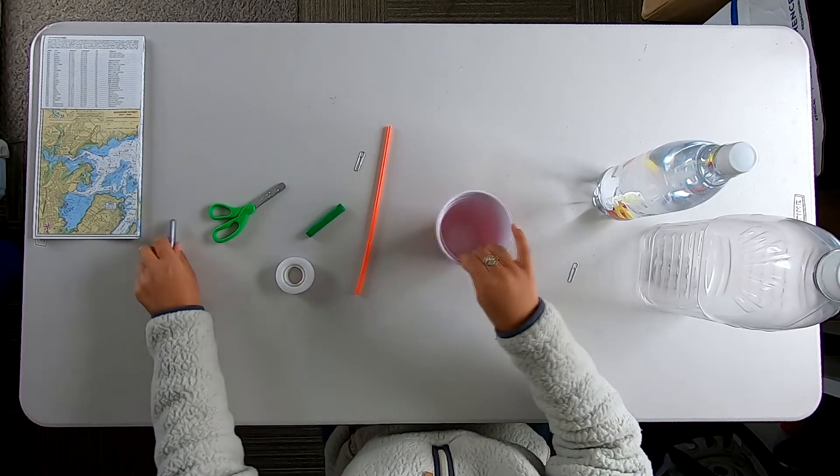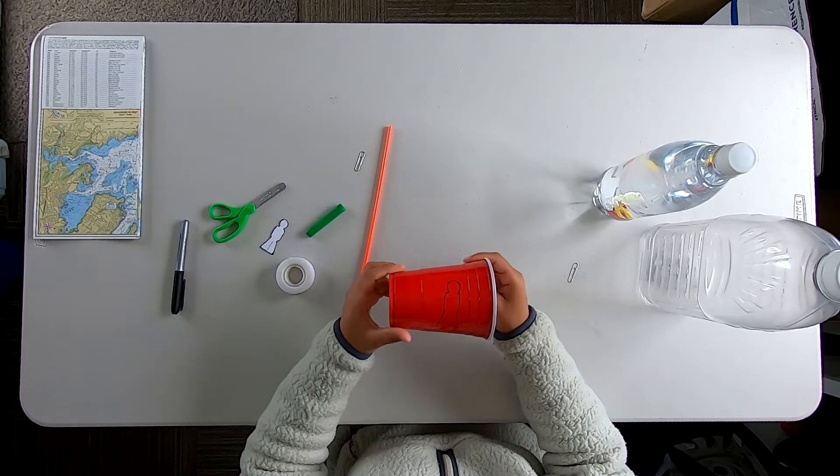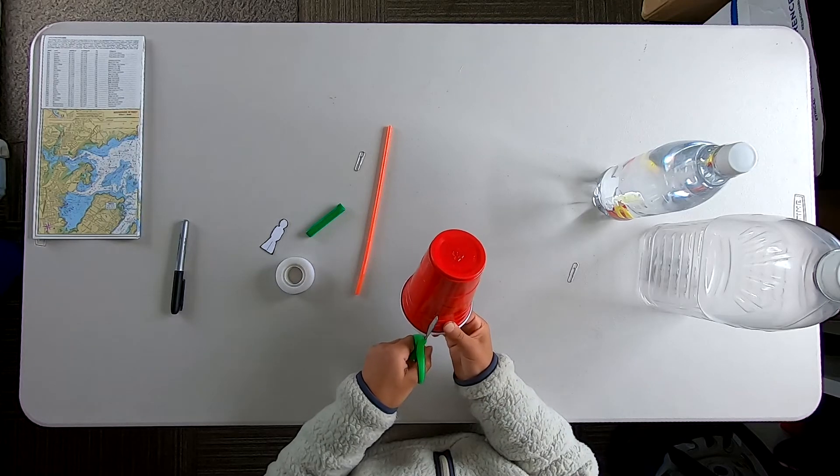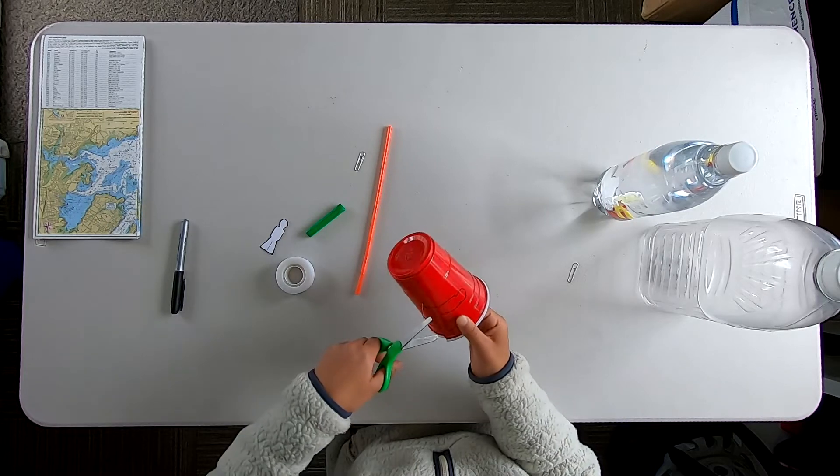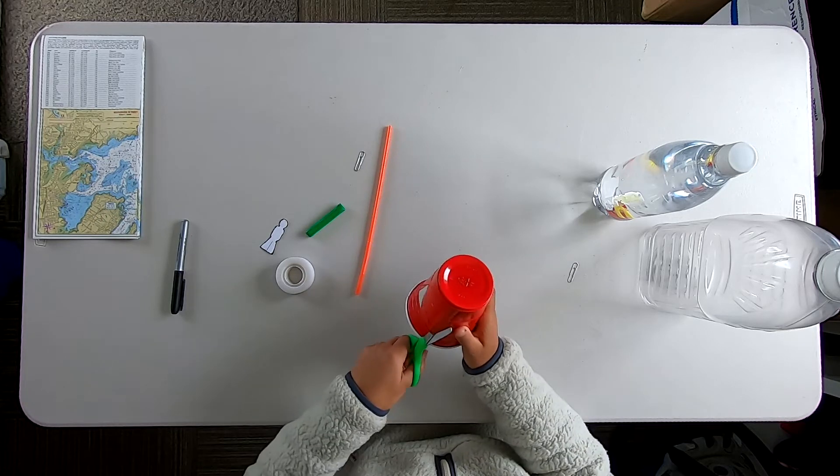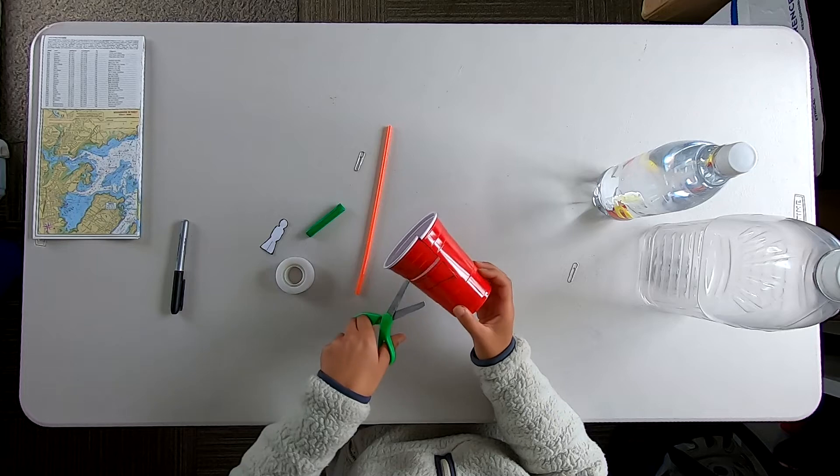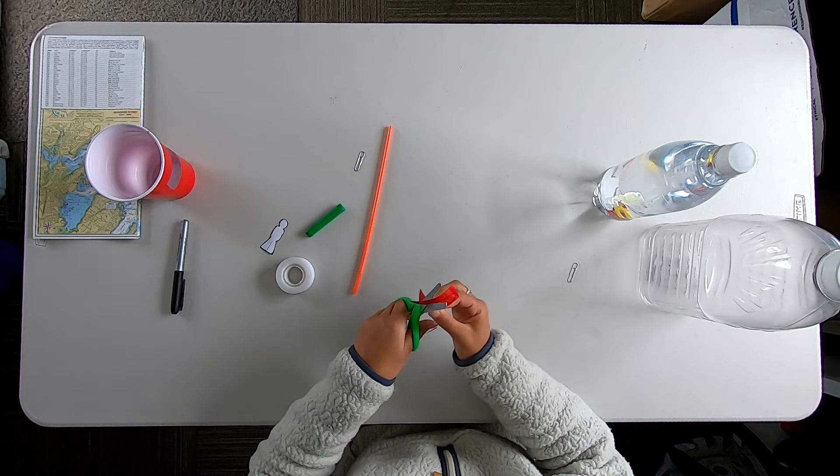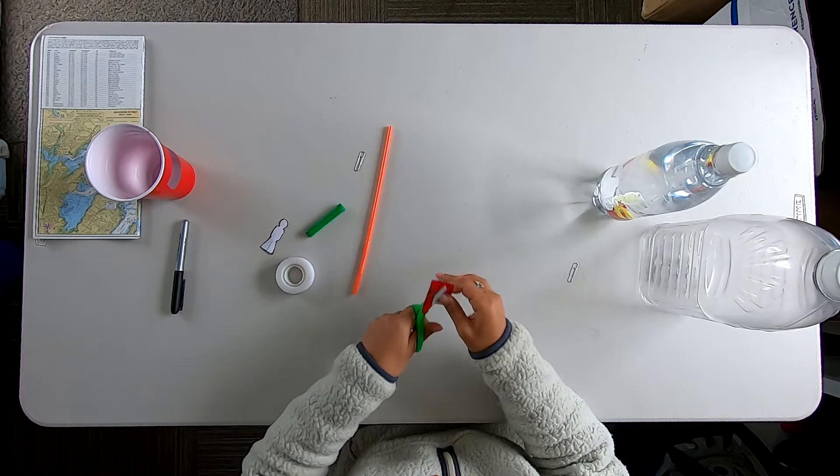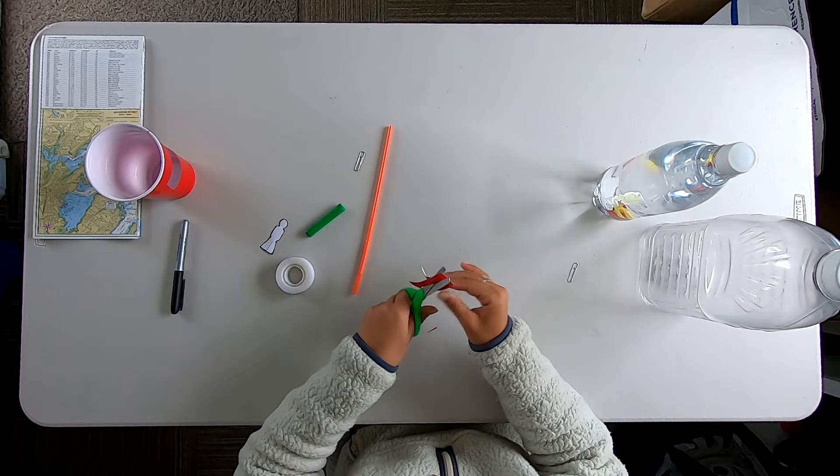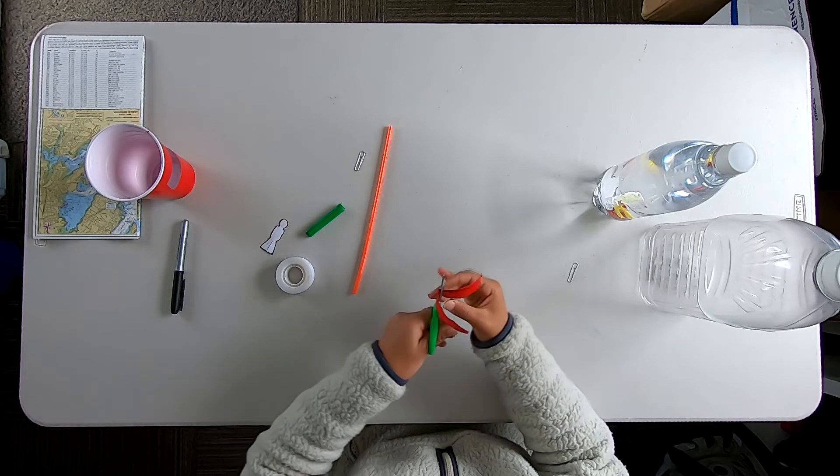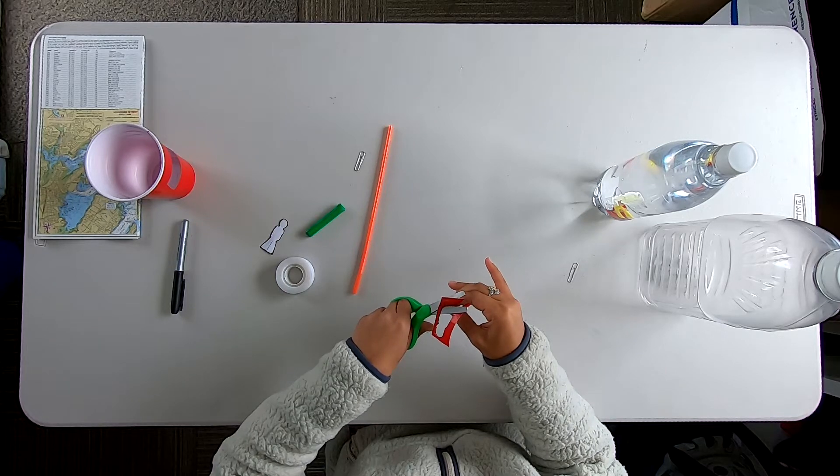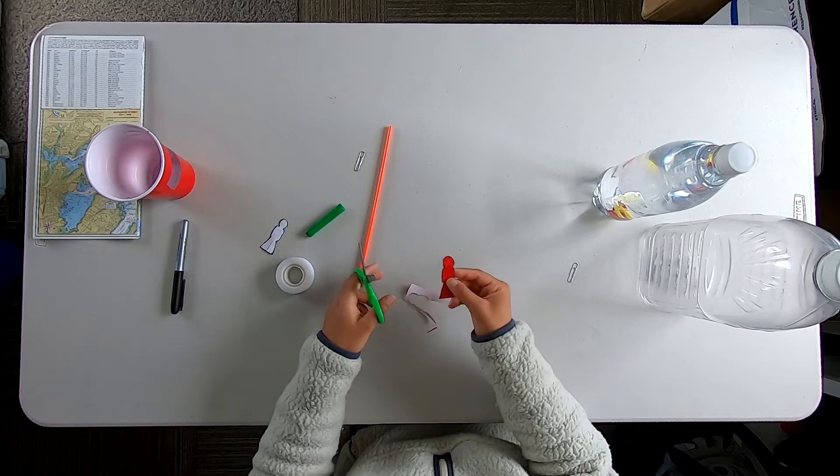Alright, after you trace it, you go ahead and peel him off. Now we're going to cut it out. There we go. Next thing you want to do is cut out your scuba diver from your plastic cup. Alright, here we go. We have our little scuba diver.